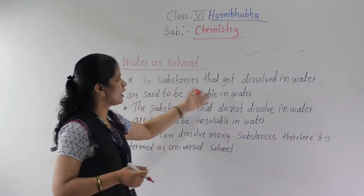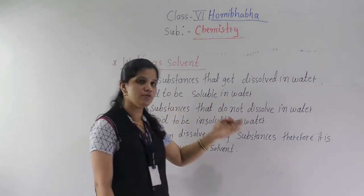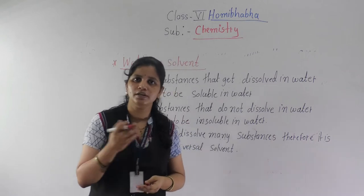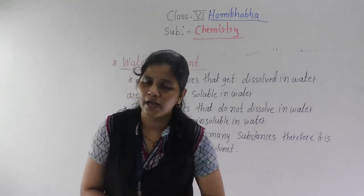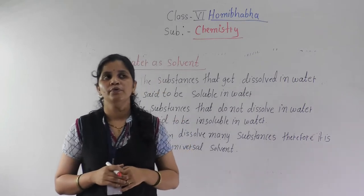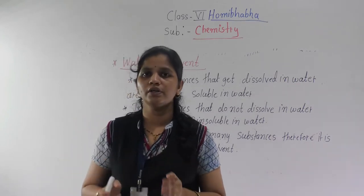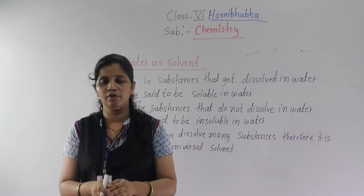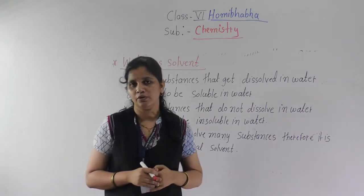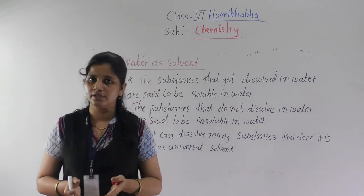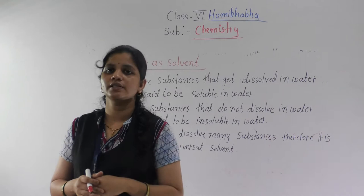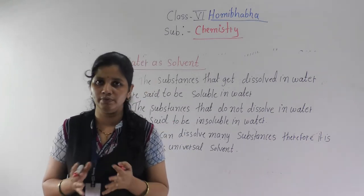The substances that dissolve in water are known as soluble substances. For example, sugar and salt. Sugar and salt totally dissolve in water, so these substances are known as soluble substances. The totally opposite of soluble substances is insoluble substances.